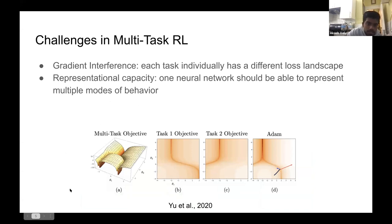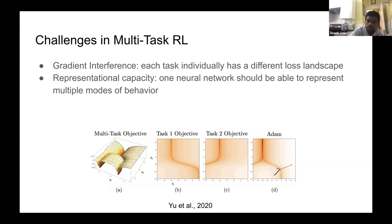There are a couple of reasons why multitask learning and multitask reinforcement learning is difficult. The first is gradient interference — a mathematical reason. If you're trying to optimize each task individually, you can imagine some sort of loss landscape. From a 2020 paper analyzing multitask learning, here you have two tasks with different loss landscapes.